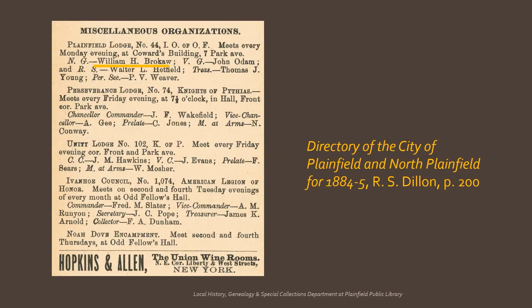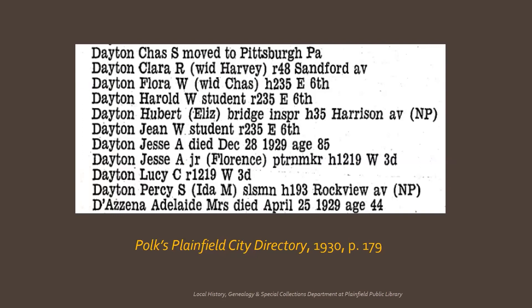Another special section that shows up in a small number of the directories is a detailed list of clubs and organizations. This is just a small portion of the groups meeting in Plainfield in 1884, and a great example of the importance of a thorough check for any names you're searching for. Who would want to miss learning that William H. Brokaw was also a top officer in the Plainfield Lodge of the International Order of Odd Fellows and may have met with them every Monday evening? Not in a special section, but being of special value, are the death announcements of the 1930 directory. That year the directory provides extra value with deaths and removals — such as the announcement that Charles S. Dayton has moved to Pittsburgh. The deaths announced run from November 1928 through October 1930.